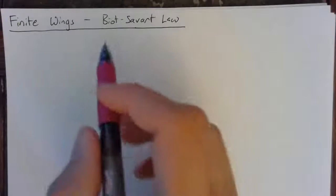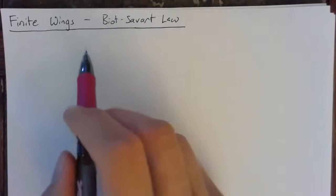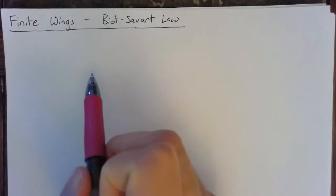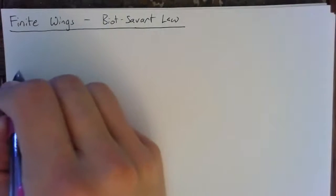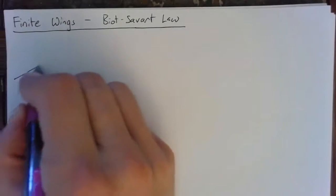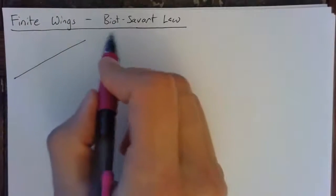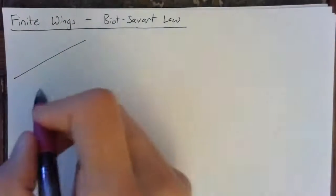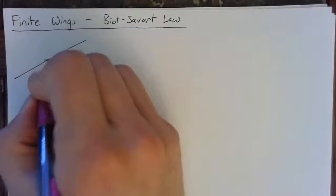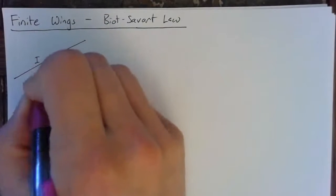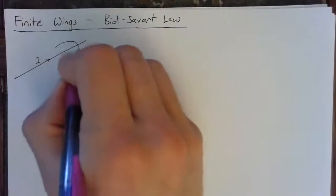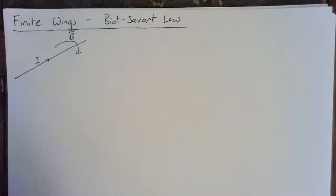Howdy. In this lesson, we're going to be putting another equation into our toolbox for the analysis. The Biot-Savart law was initially created for electricity and magnetism, specifically looking at a wire that had some current I along the wire, which generated some magnetic field B.